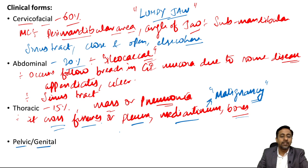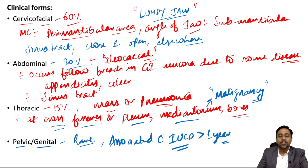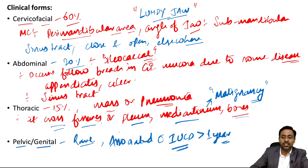Pelvic and genital actinomycosis is rare; however, when present it is usually associated with IUCD usage, typically more than one year of use. CNS actinomycosis is also recognized but is very rarely seen.